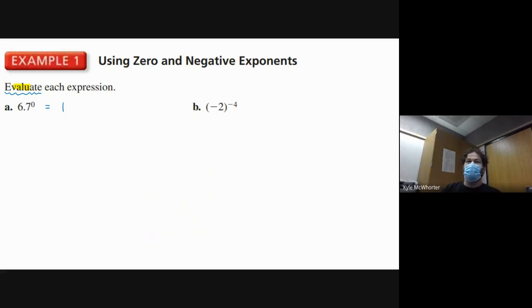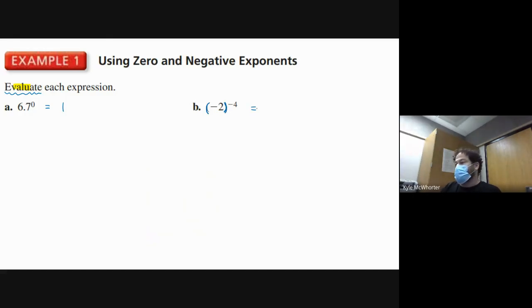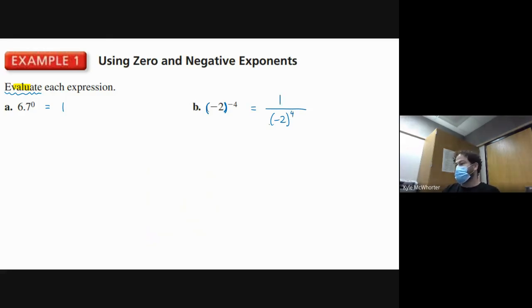Let's look at part B: negative two to the negative fourth power. The negative four power means we take whatever the base is — the whole parentheses — and put that many factors in the denominator. So we're going to have negative two to the positive fourth power in the denominator, and just a one left on top.